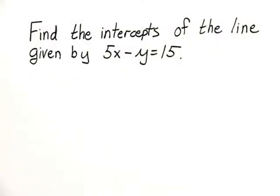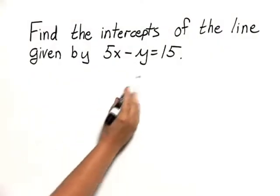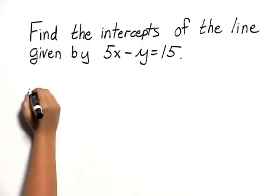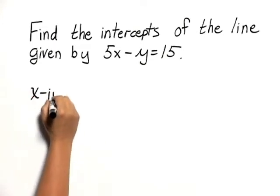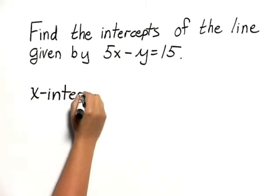Find the intercepts of a line given by 5x minus y equals 15. We need to find the x-intercept and the y-intercept, so let's start by finding the x-intercept.